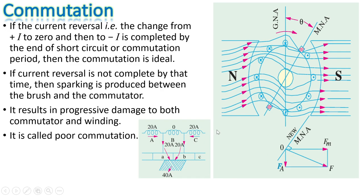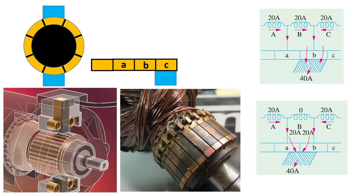If the current reversal — that is, the change from positive maximum value (+i) to zero and then to negative value (−i) — is completed by the end of the short-circuit or commutation period, then the commutation is said to be ideal. If current reversal does not complete by that time, sparking is produced between the brush and the commutator. This results in progressive damage to both the commutator and the winding, and is called poor commutation.